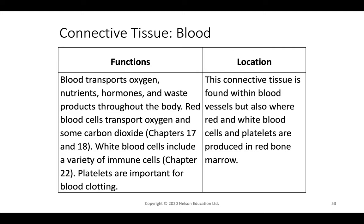Blood is responsible for oxygen transportation and carbon dioxide delivery to the lungs, nutrient delivery from the digestive tract, and transporting hormones and waste products throughout the body. Red blood cells focus on oxygen and carbon dioxide; white blood cells handle immune functions; platelets manage blood clotting. Blood is found within blood vessels and produced in the bone marrow.